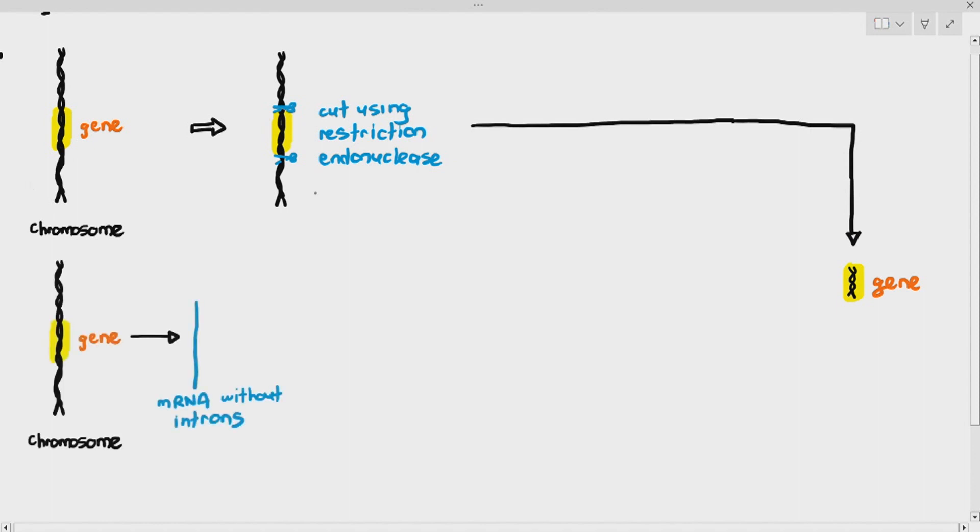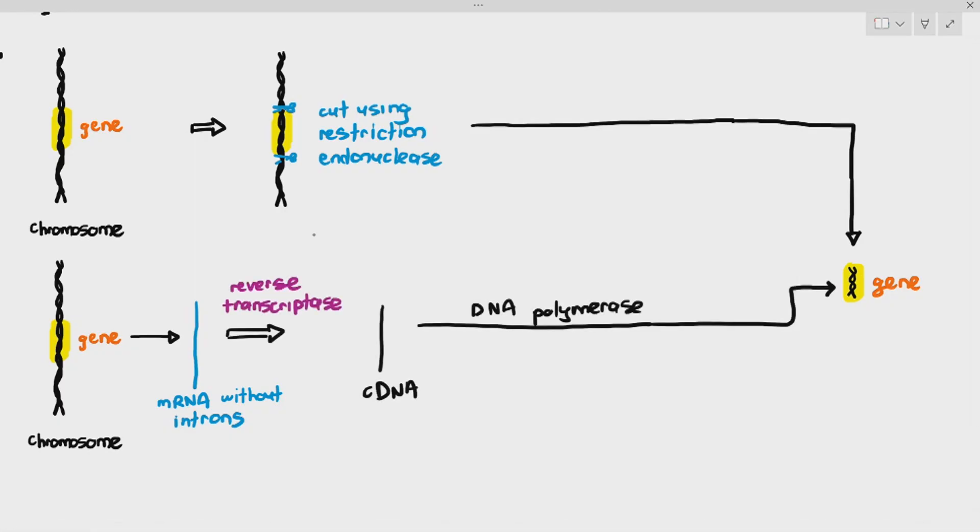If you cannot do that or if the gene is full of introns, you allow the organism to first express the genes so that it produces the mRNA without introns, you take that mRNA out, use the reverse transcriptase enzyme to make it back into DNA, which is cDNA, complementary DNA, use DNA polymerase to make it into a double-stranded DNA. You get the gene there.